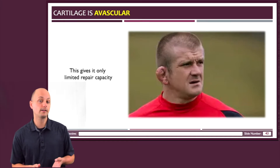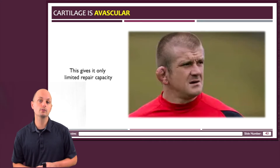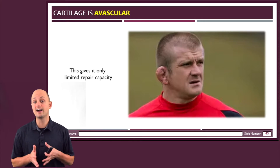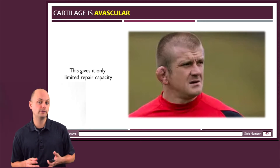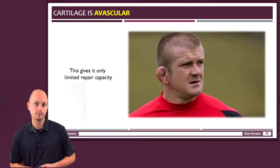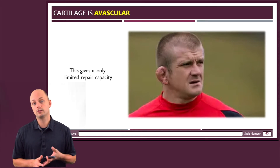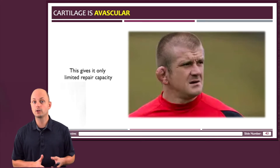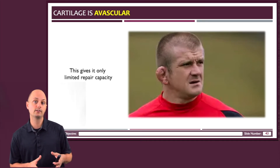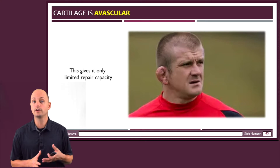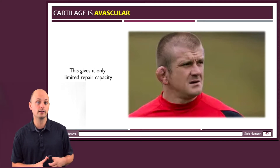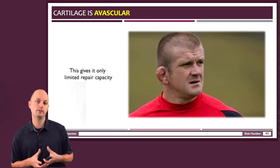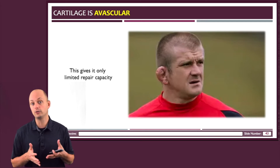Even though bone and cartilage have a lot in common with each other, one really critical difference is that bone is a very vascular tissue, whereas cartilage is mostly avascular. Being further from the blood supply makes it harder for a tissue to access critical nutrients.